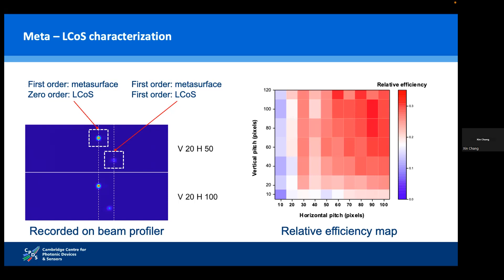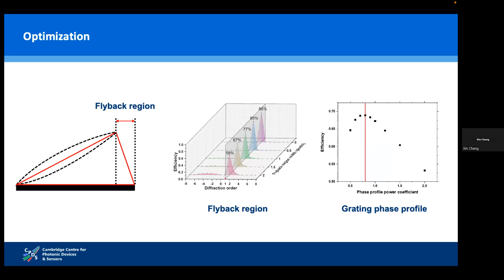We recorded the relative efficiency for different pitches — or periods — of the blazed grating on the ALCOS side in both vertical and horizontal directions. As expected, since pitch is in an inverse relationship to steering angle, with a smaller steering angle the relative efficiency is higher; with a larger steering angle it's smaller.